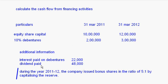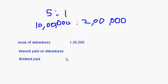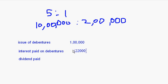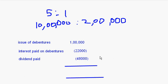Interest on debentures is 22,000, so that will be 22,000 outflow, and dividend paid is 48,000. So total outflows are 70,000. The calculation is 1,00,000 minus 70,000, so the answer is 30,000. This is the net cash flow from financing activities.